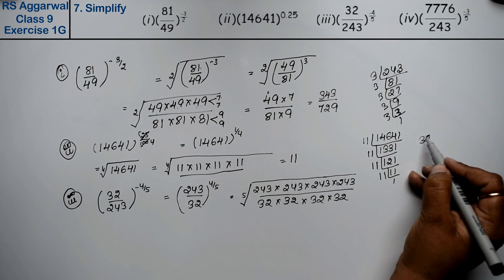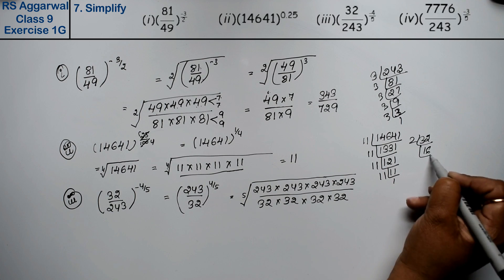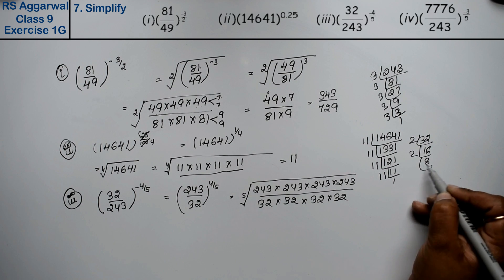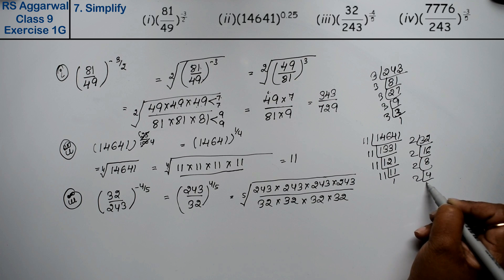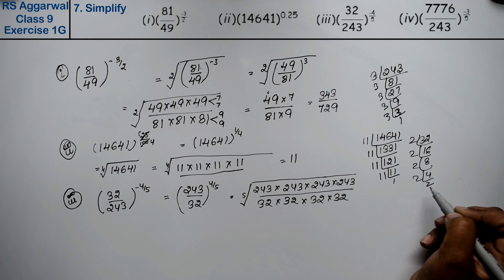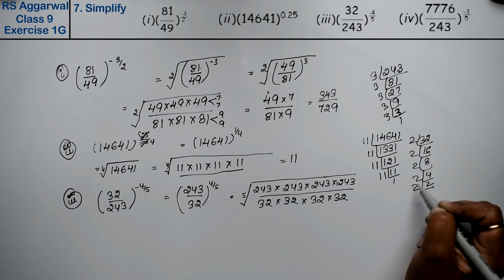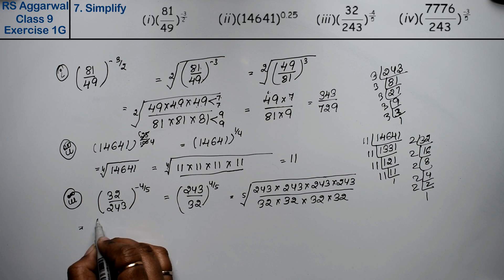And factoring 32: 2 × 16, 2 × 8, 2 × 4, 2 × 2, 2 × 1 — that's also 5 twos. So both 243 and 32 split into 5 equal factors.